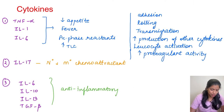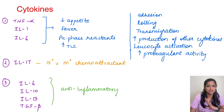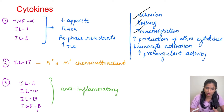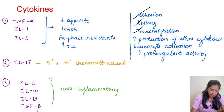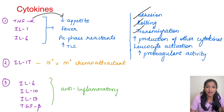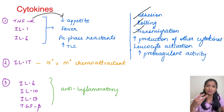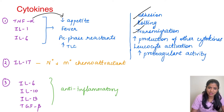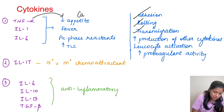Moving on to the next inflammatory mediator: cytokines. The important ones are TNF-alpha, interleukin-1, and interleukin-6. These are majorly responsible for cellular events in acute inflammation like adhesion, rolling, transmigration, activation of leukocytes, and increasing production of other cytokines. They also have systemic effects like decreasing appetite, causing fever, increasing production of acute phase reactants, and activating leukocytes. TNF-alpha is majorly responsible for decreasing appetite. In cancer patients who appear very thin — called cancer cachexia — TNF-alpha is responsible. So if asked what cytokine causes cancer cachexia, the answer is TNF-alpha.